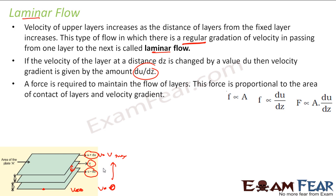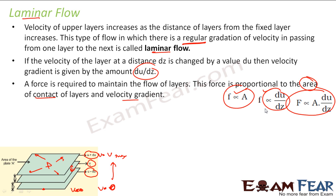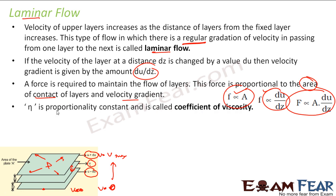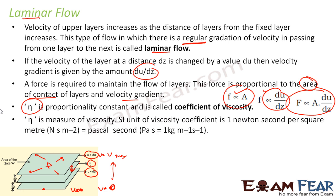There is a force required to maintain the flow, and this force is proportional to both the area of contact and the velocity gradient du/dz. Taking both into consideration, force is proportional to A × (du/dz). Since this is a proportional relationship, we introduce a proportionality constant called the coefficient of viscosity, giving us: F = η × A × (du/dz).